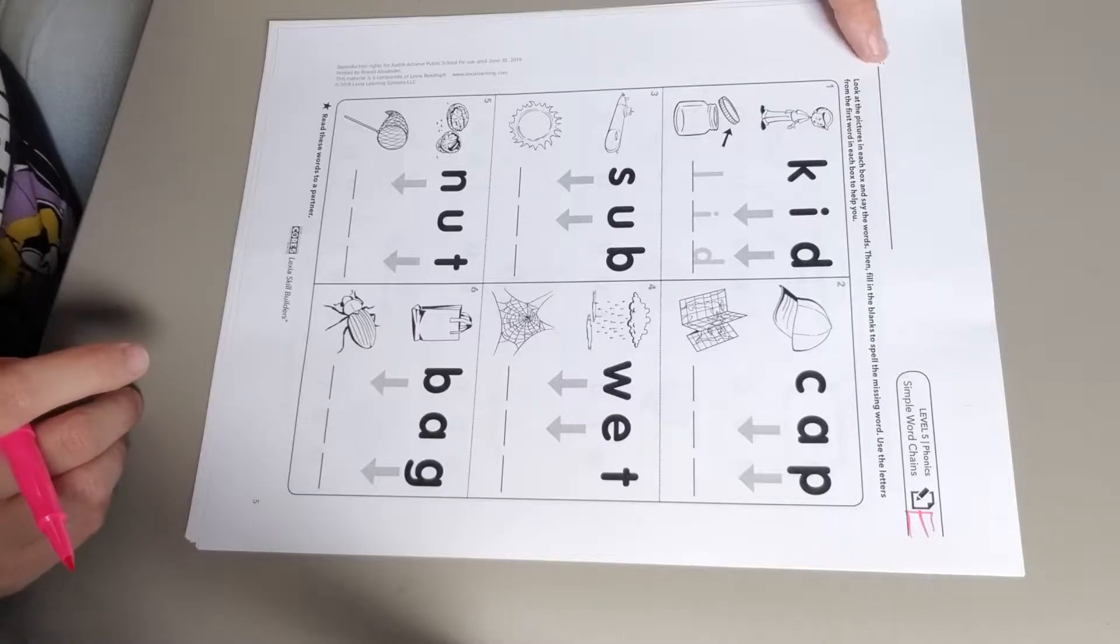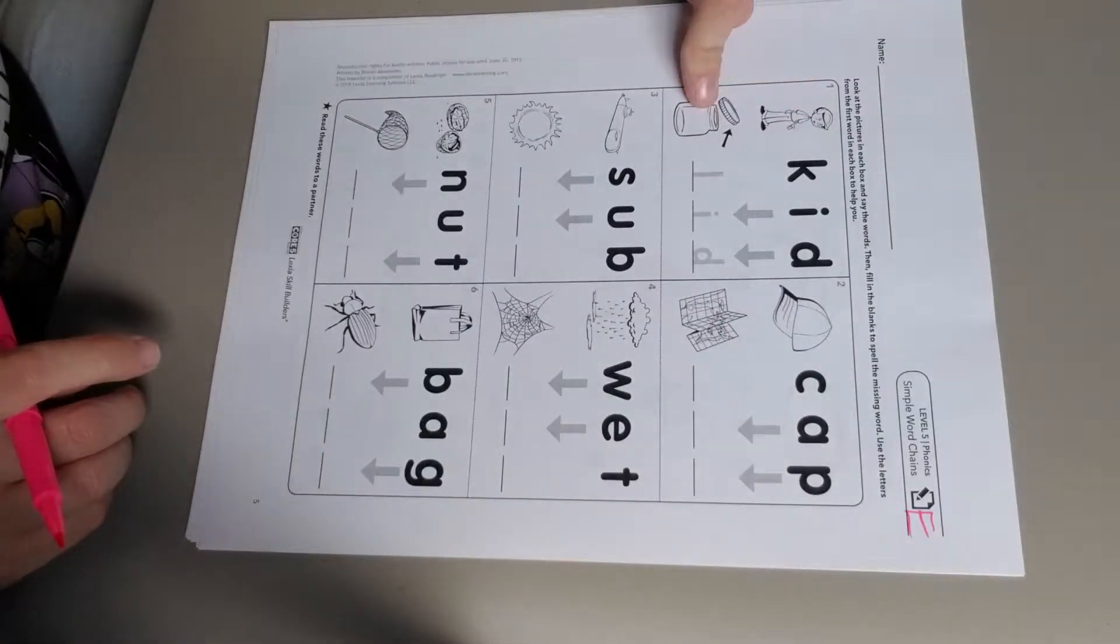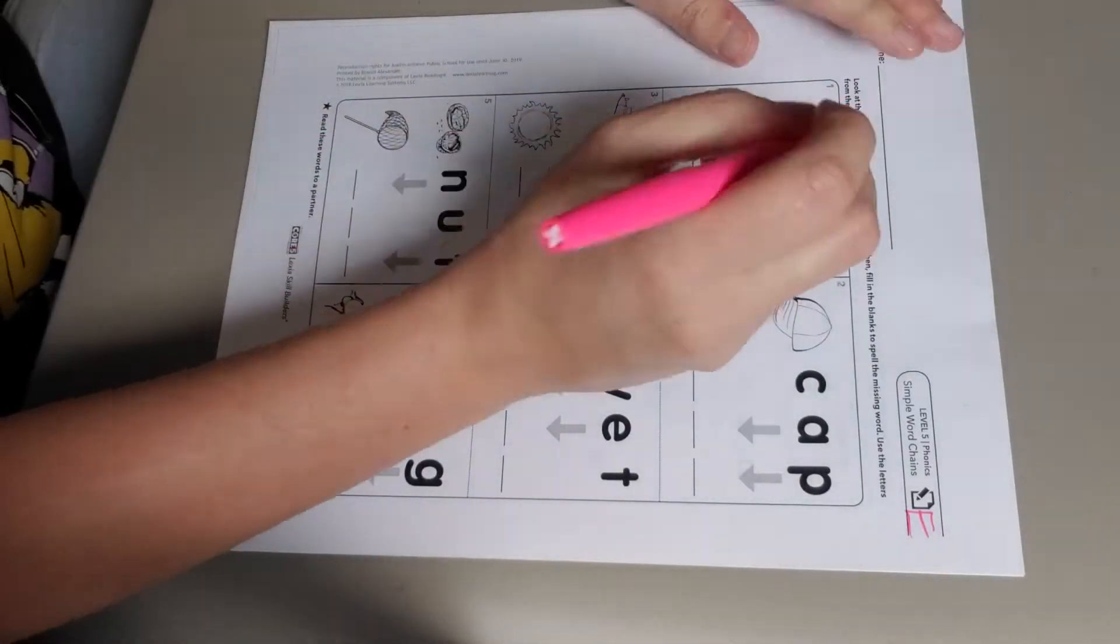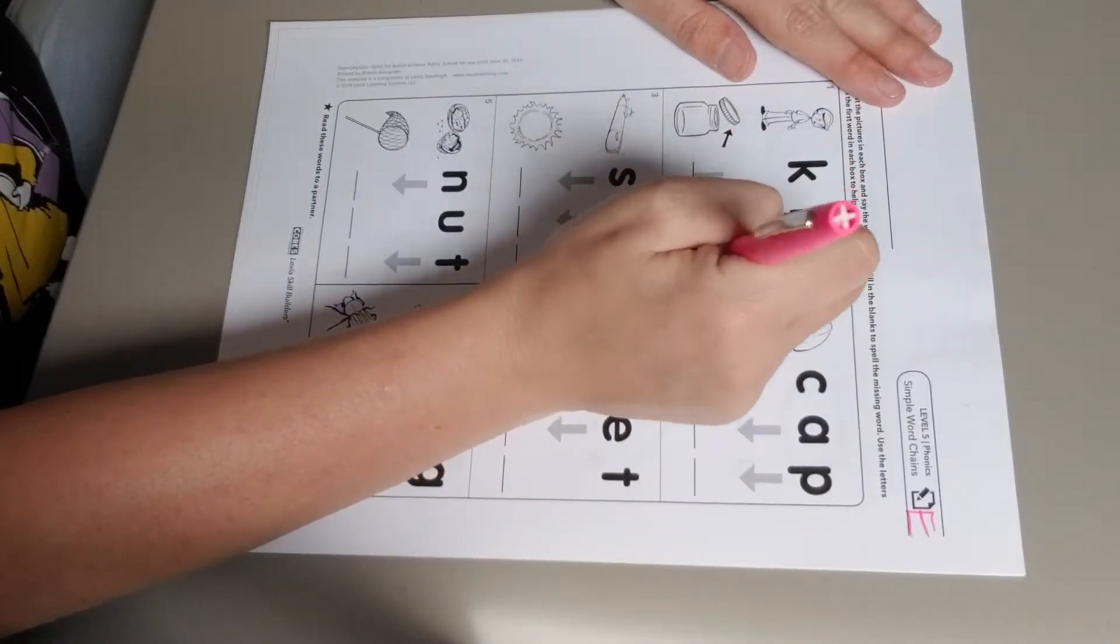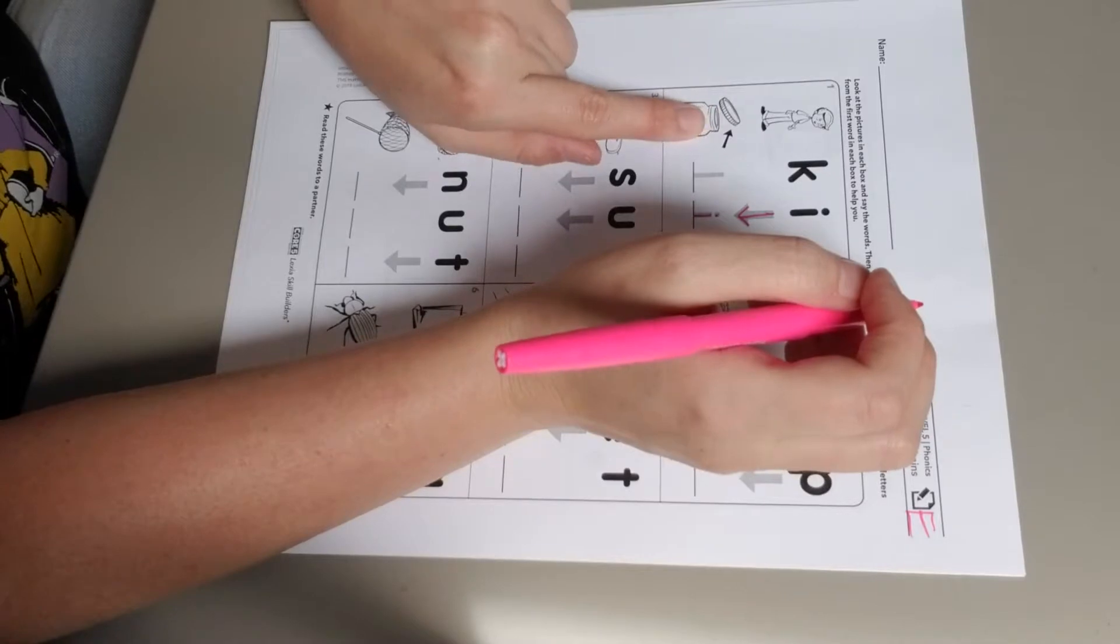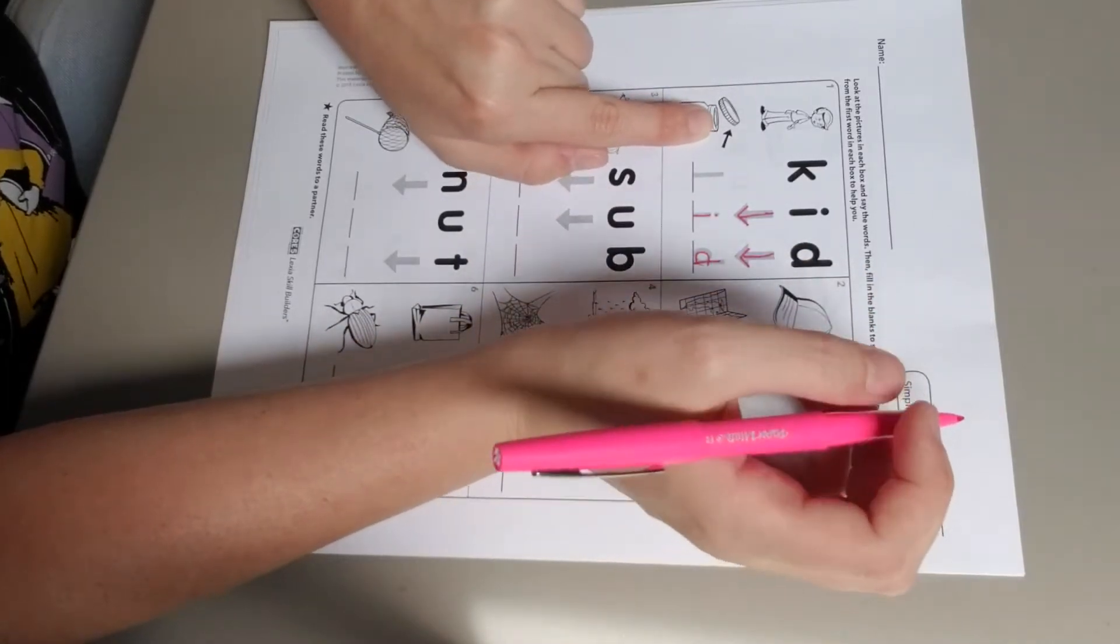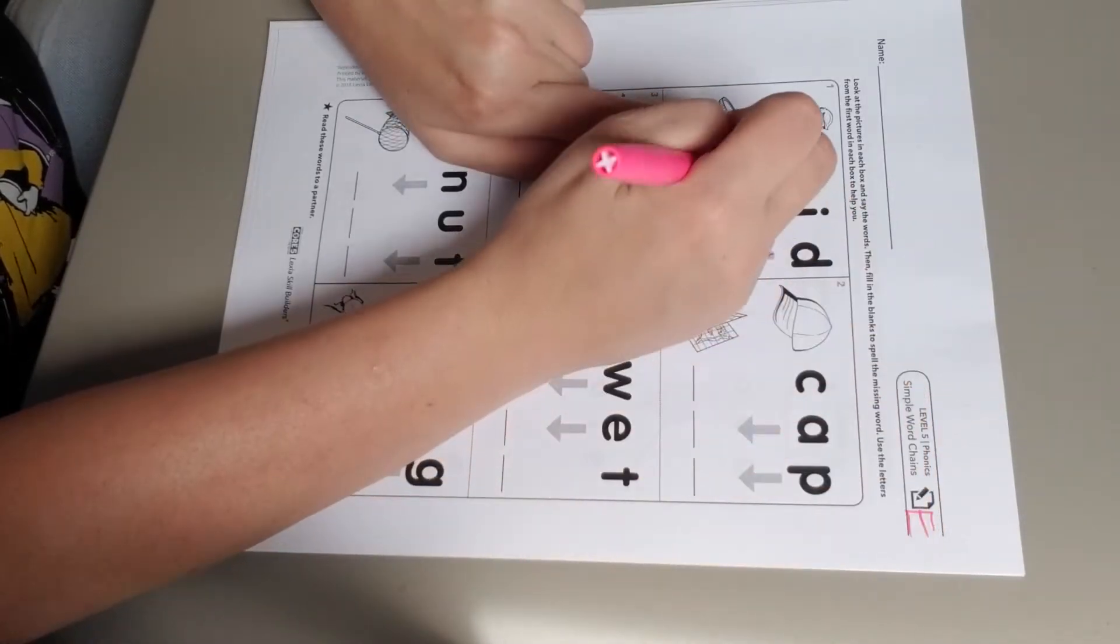So this is a kid, and we want to change it to lid. They've shown us with these arrows they want you to bring down those letters. I'm gonna bring my I-N-D down, and then I'm gonna think 'lid'—what sound makes the /l/? I know an L, so I'm gonna write an L in that blank.